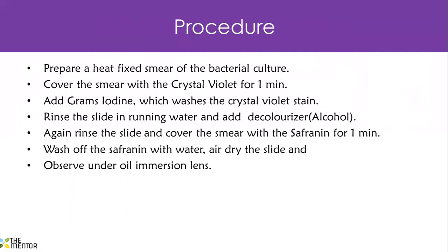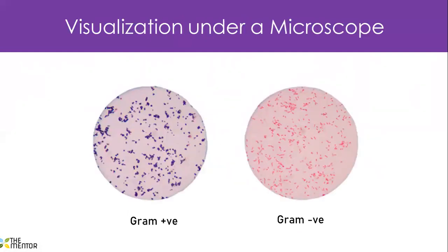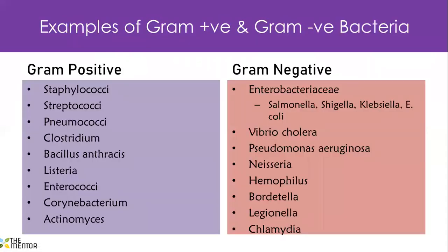At visualization under the microscope, after completing all those steps, what we expect to see is: Gram positive bacteria appear purple or blue in color. Gram negative bacteria appear clearly pink or reddish in color. That is how you would see them under a microscope. It is a simple procedure and that's basically how it's done.